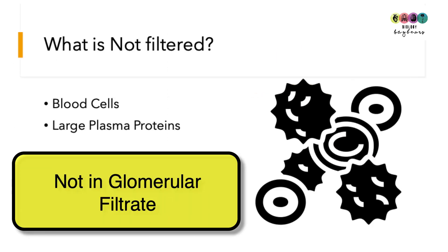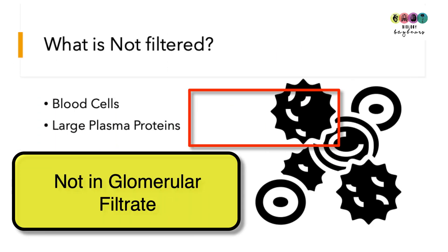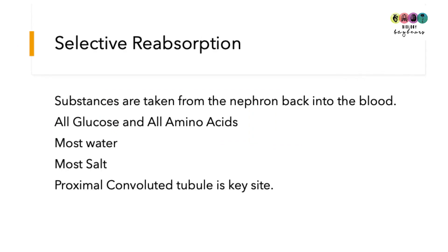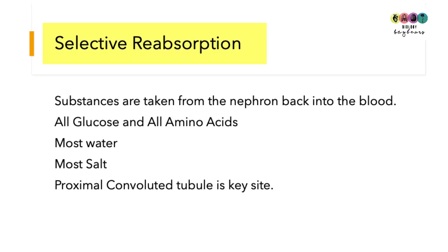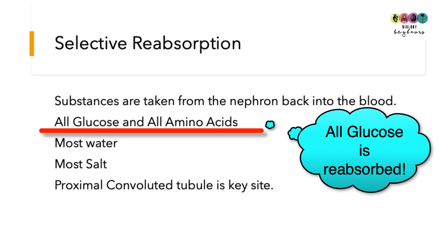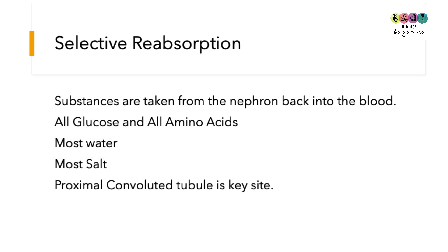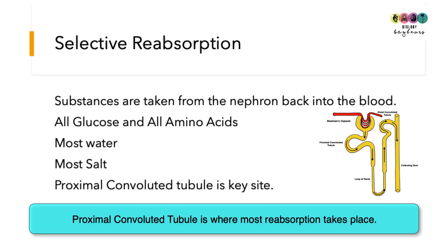After filtration, many substances in the glomerular filtrate must be taken back into the blood — this is called reabsorption, or selective reabsorption, because only certain substances are reclaimed. All glucose, all amino acids, most of the water, and most of the salt are reabsorbed. Most of this reabsorption occurs at the proximal convoluted tubule, which is the key area for reabsorption.